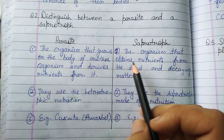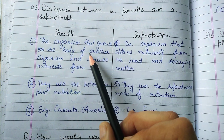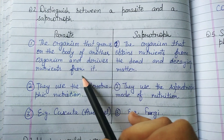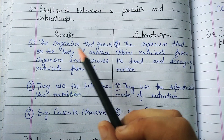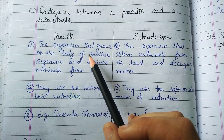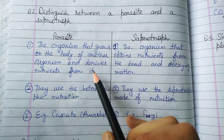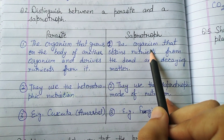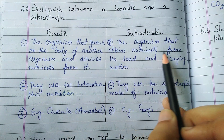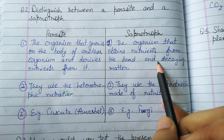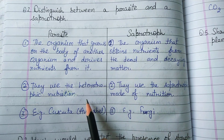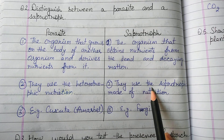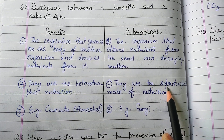Parasite aur saprotroph mein kya difference hai? Parasite woh organism hote hain jo doosre ki body par grow karte hain aur unse apna nutrient lete hain. Saprotrophs kaun se hote hain? Jo nutrients dead matter se lete hain apna — ye heterotrophic nutrition use karte hain aur ye hain saprotrophs.